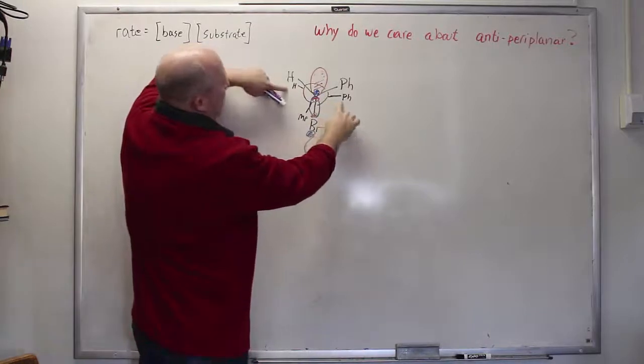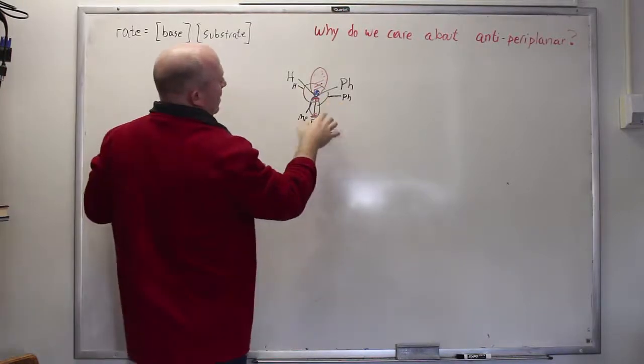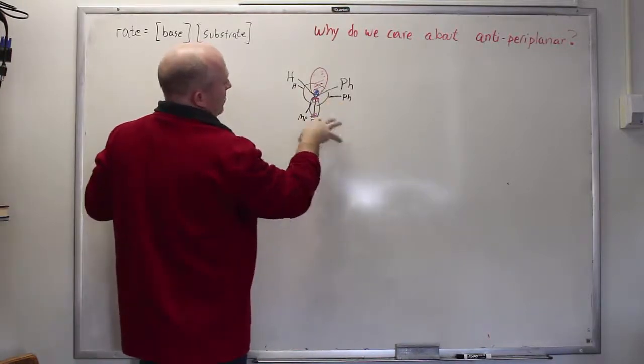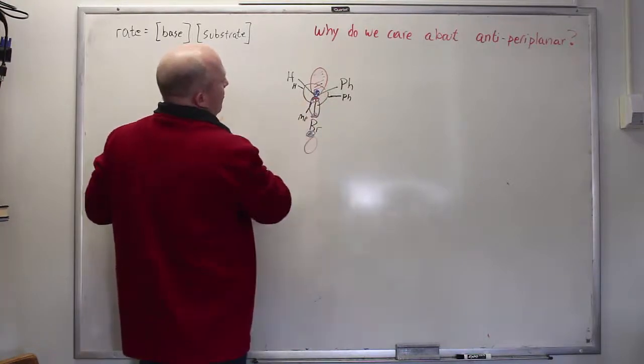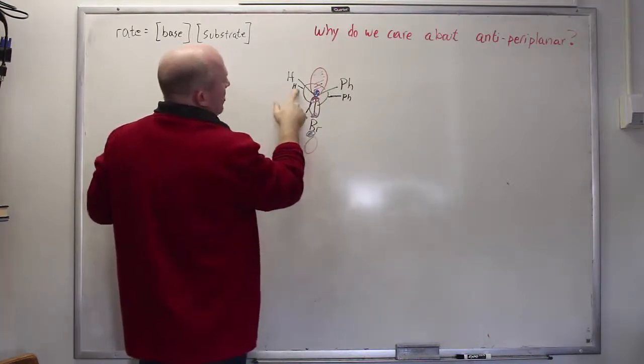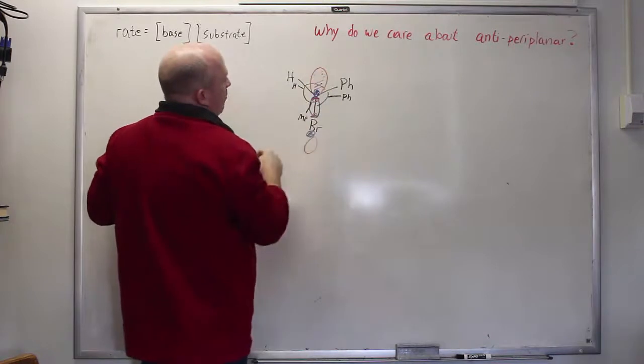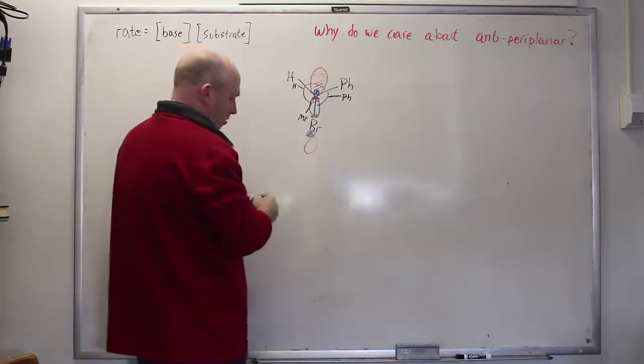You will also note that the carbon in the back is currently eclipsing the carbon in the front or perhaps the carbon in the front is eclipsing the one in the back. No matter if a base were to come by and try to abstract this hydrogen, this hydrogen is not well aligned with that particular orbital.